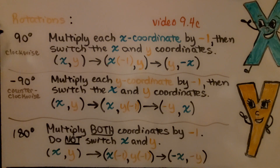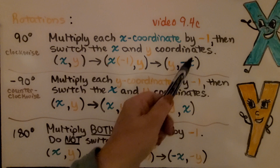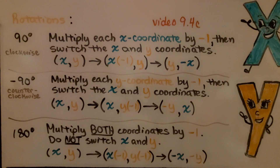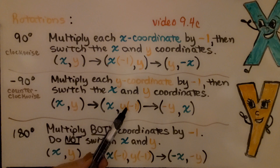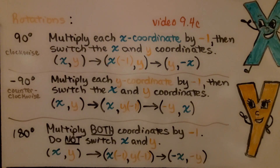If we're rotating positive 90 degrees, we go clockwise. We multiply each x coordinate by negative 1, then switch the x and y coordinates — that gives the new x and new y. If we're rotating negative 90 degrees, we go counter-clockwise. We multiply each y coordinate by negative 1, then switch the x and y coordinates. If we're doing a 180 degree rotation, we multiply both coordinates by negative 1 and do not switch x and y — we get negative x, negative y.